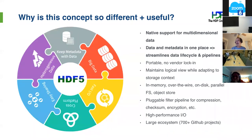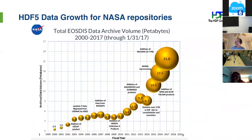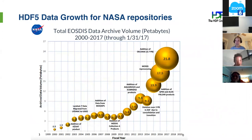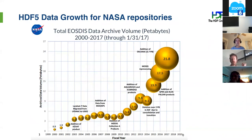A challenge we have now is the growth in the amount of data. This slide from a NASA presentation shows how the collection of HDF5 data from satellites has grown from about half a petabyte in 2000 to over 20 petabytes now, and it's only projected to grow more because there are more satellites, each with more instruments, collecting more data at a time.